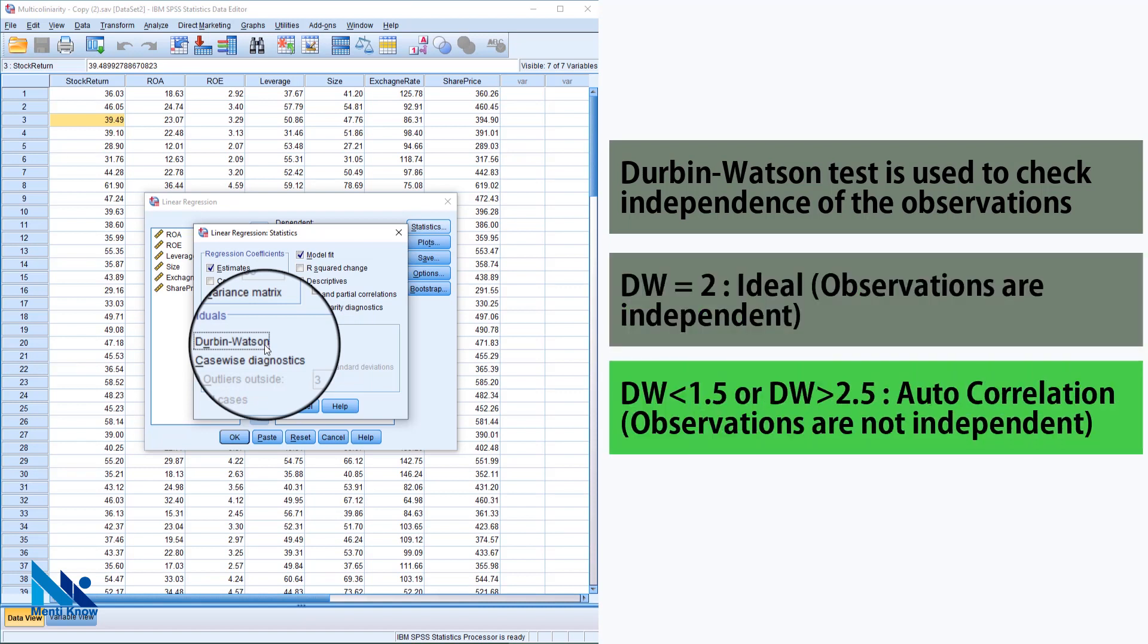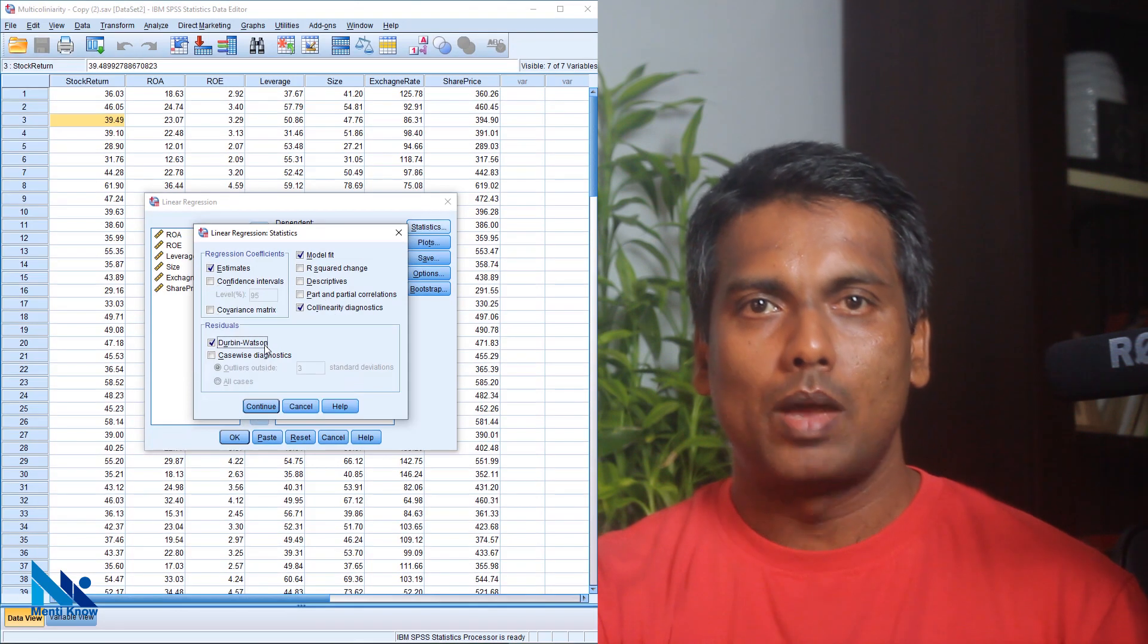Independence assumption is frequently violated in time series data. This means if you have collected data over a certain period of time, you need to pay attention to this assumption as well.